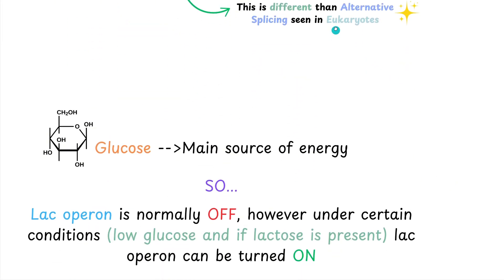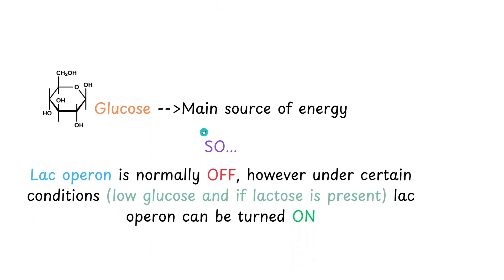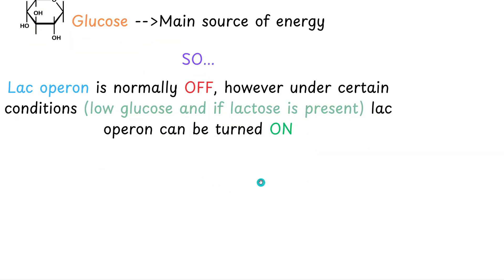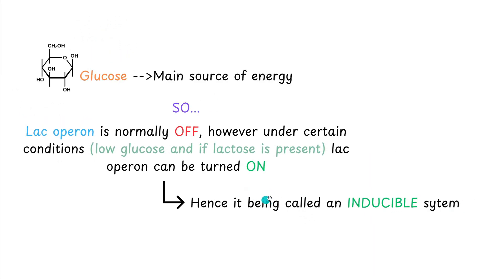Now let's talk about glucose. So glucose is the main energy source for E. coli. When it is present, the lac operon usually remains off when glucose is available, because there's no need to waste energy transcribing lactose metabolizing enzymes. However, under certain conditions, where there is low glucose and if lactose is present, the lac operon can be turned on. This is cool because it essentially explains why we call it an inducible system, because it is normally turned off when there is normal levels of glucose. However, under certain conditions, like we said, low glucose and lactose being present, it can be turned on.